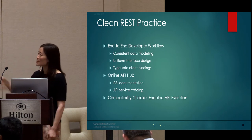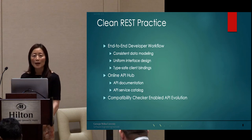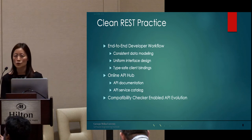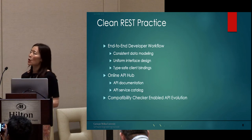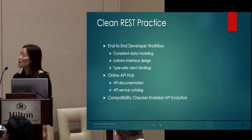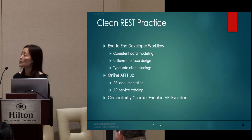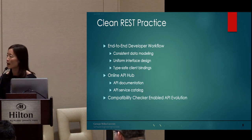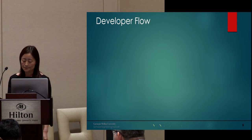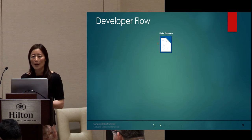I want to highlight two key points that differentiate Rest.li from other REST frameworks: clean REST practice and scalable open source. There's a famous Chinese proverb: nothing can be accomplished without norm and standard. This is particularly true for building large-scale infrastructure. Rest.li aims to set this norm and standard by promoting clean REST practice from three aspects: end-to-end developer workflow, an online API hub for documentation and service catalog, and capability-checker-enabled API evolution.